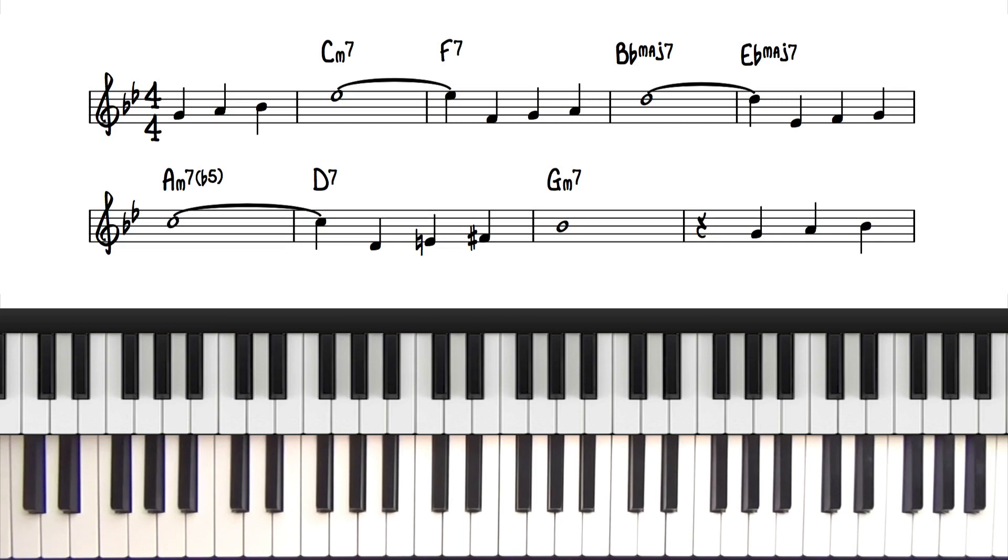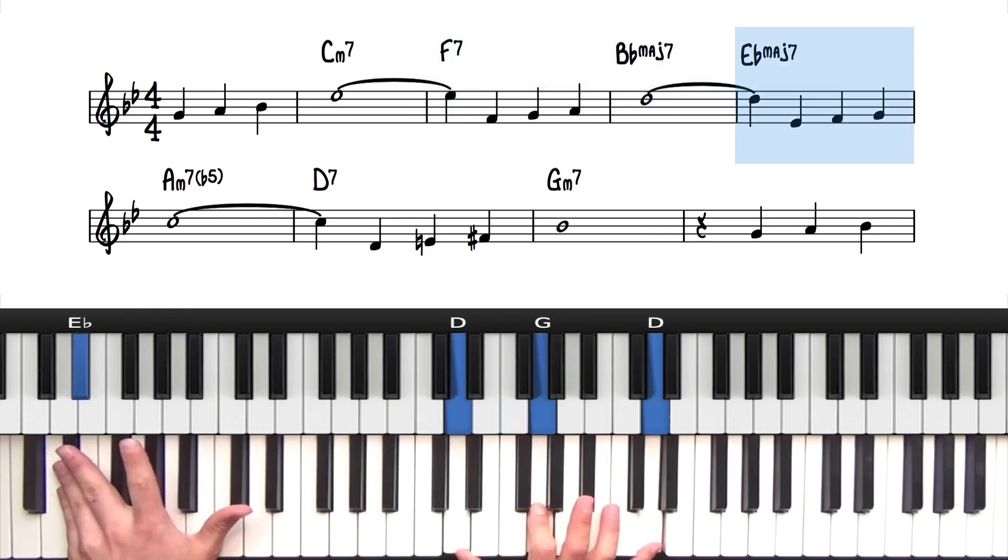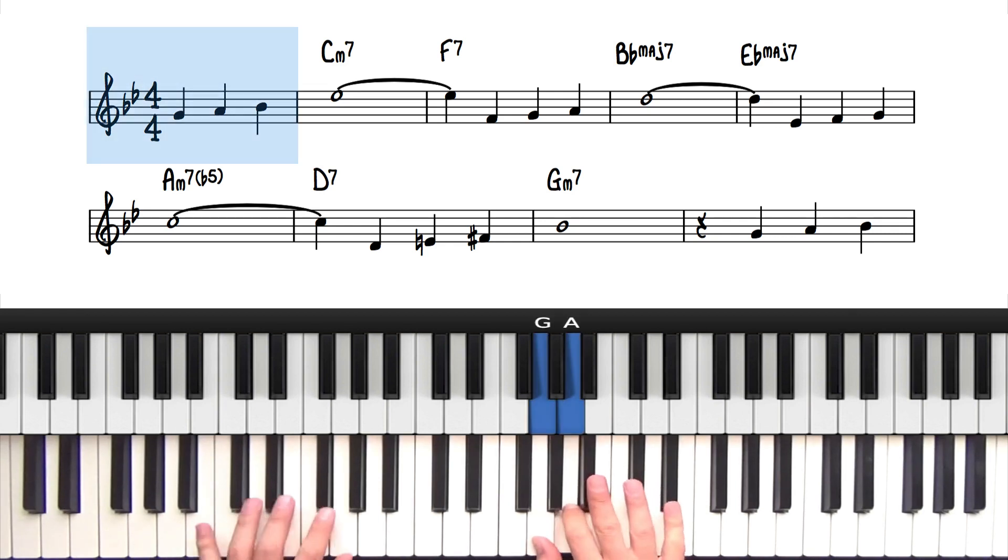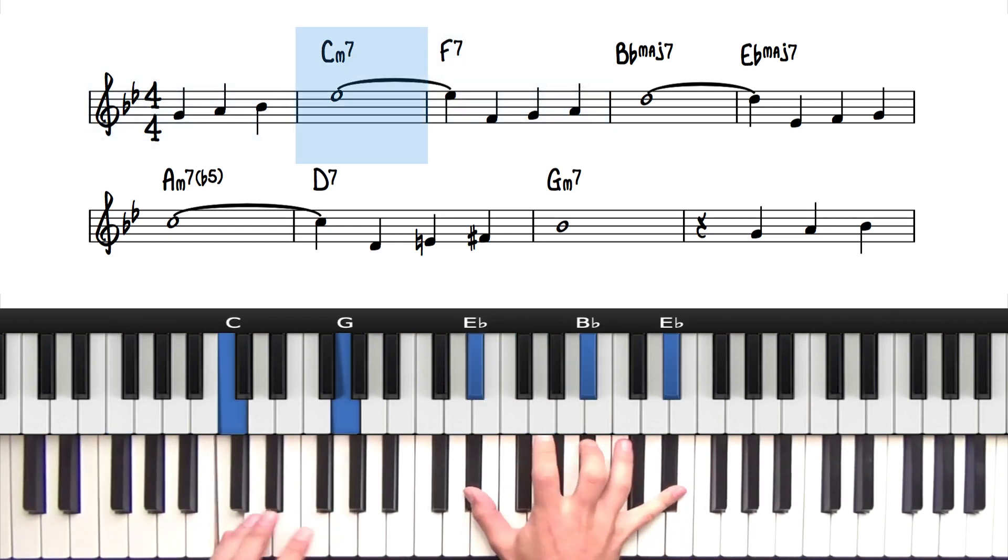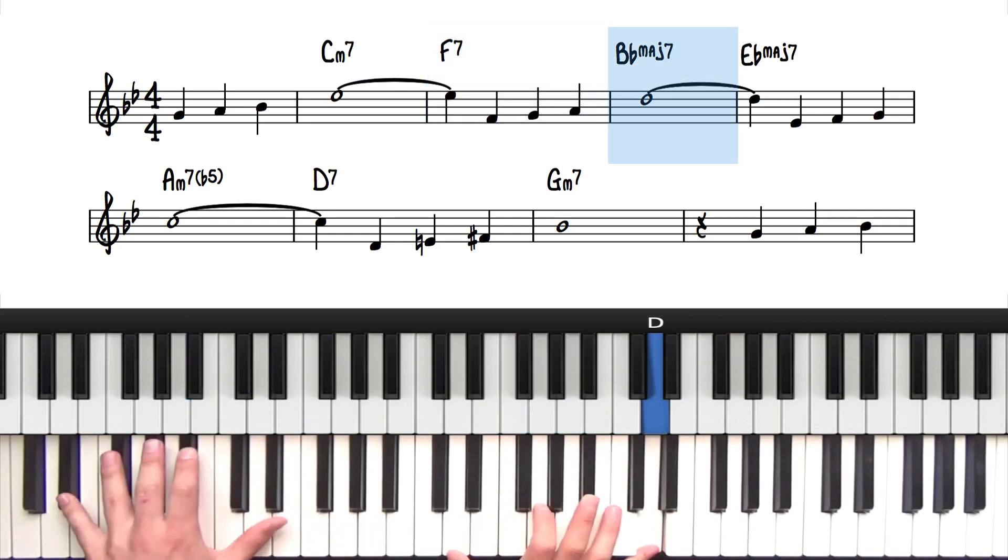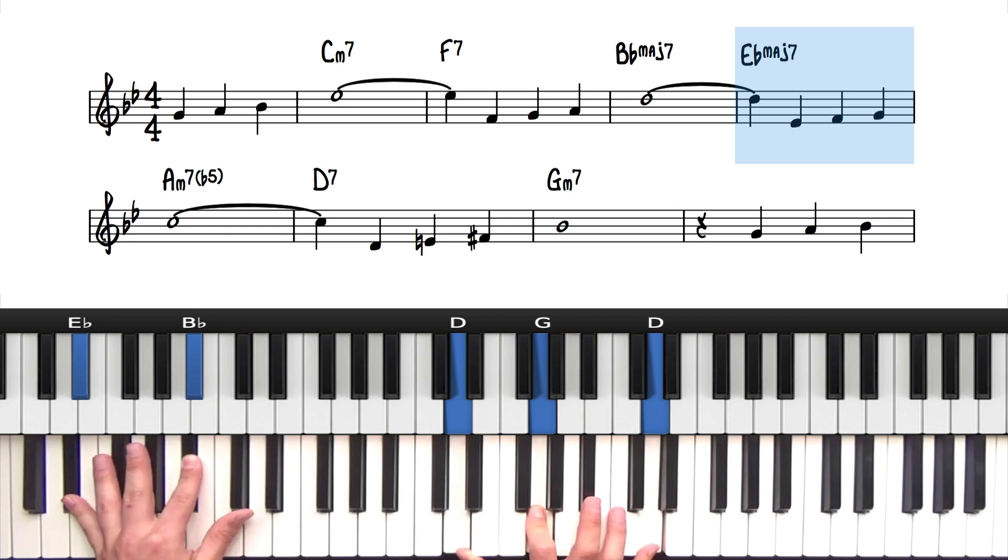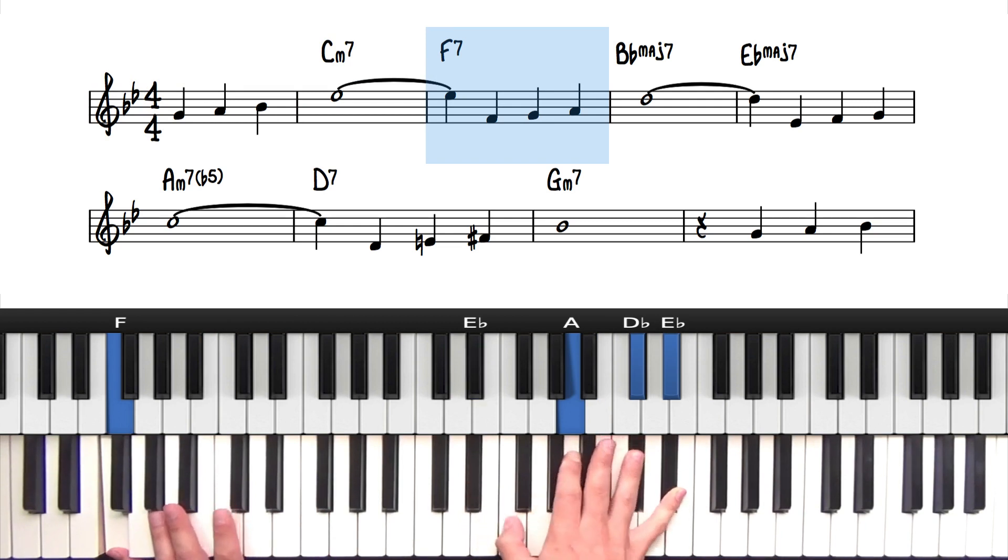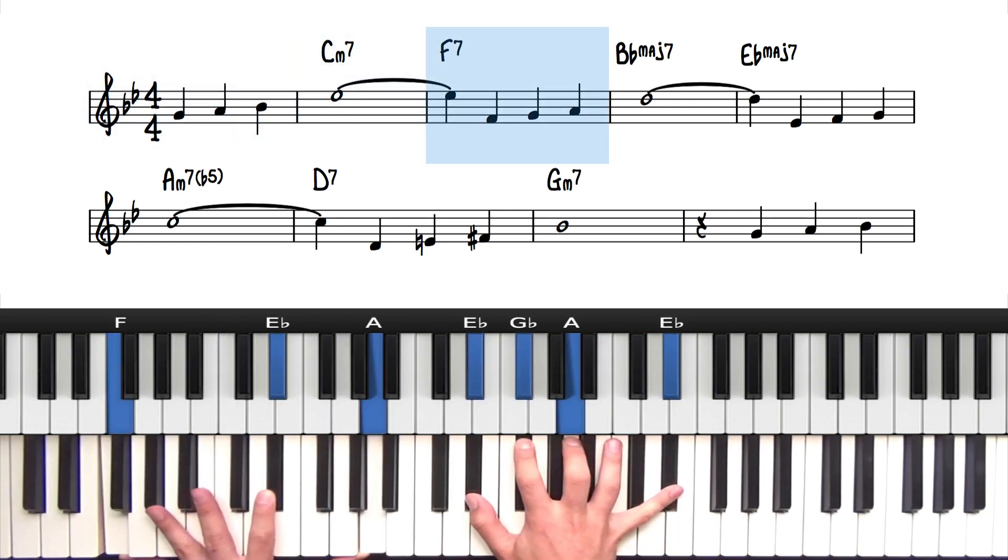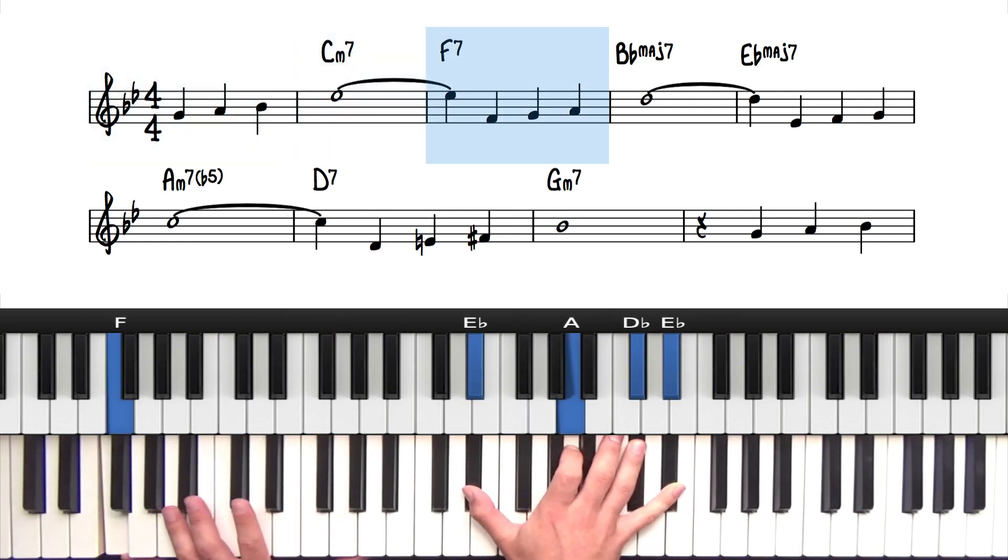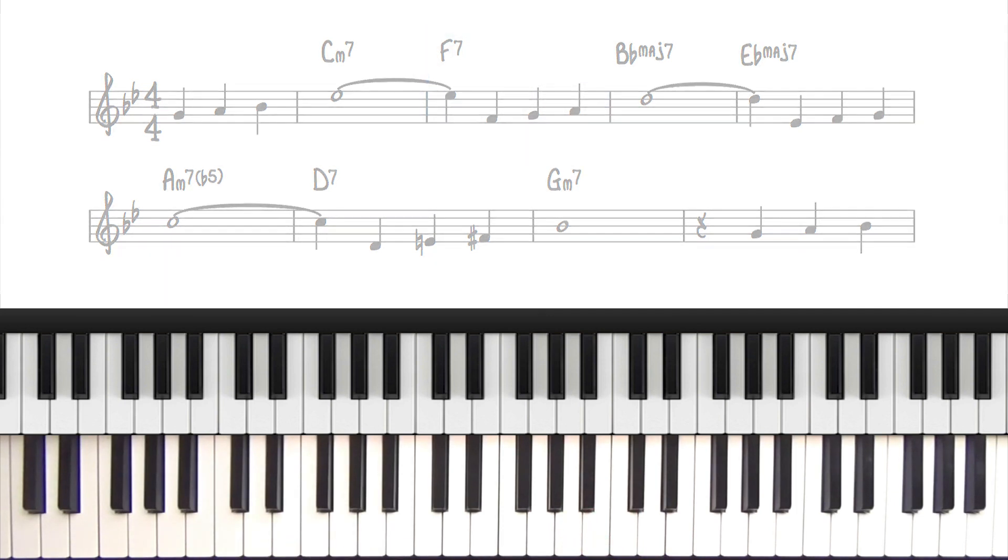First let's take the tune Autumn Leaves and apply these alterations to the 5 chords. We start with a 2-5-1 in B flat major. And notice over the F7 that I didn't play any alterations. So first of all, let's experiment with the flat 9. Sounds great, adds some extra color. Now let's try the sharp 5. You'll hear that didn't sound quite as good. The flat 9 sounds great, but the sharp 5 doesn't work with the harmony. And so this is a process of experimentation that you'll go through.